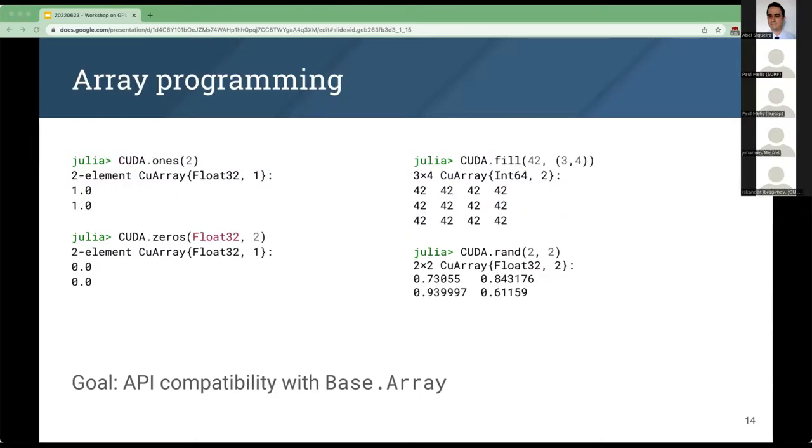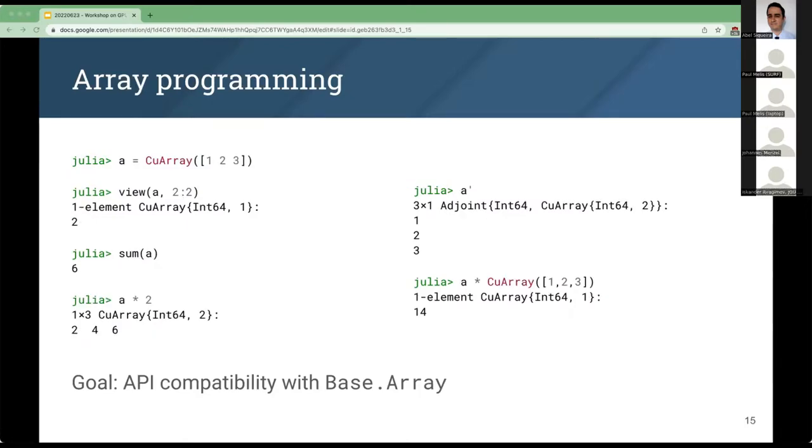For APIs that do not take a type argument, we have module prefix versions. For example, RAND will always allocate a CPU array, so we have CUDA.RAND to generate a CUDA array with random numbers. The same for ones, zeros, and fill functions.